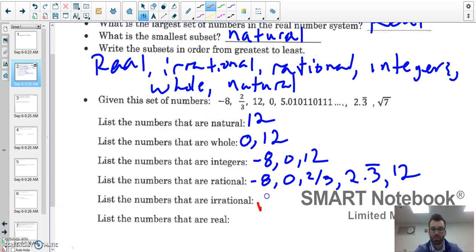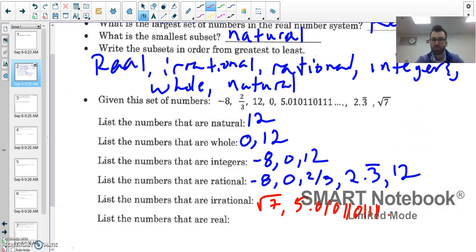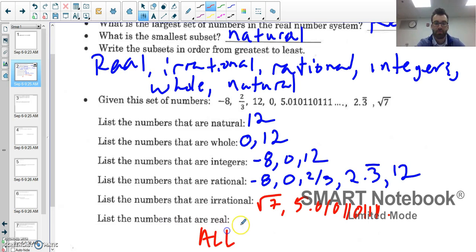List any irrational numbers. Well it's just the rest, the ones that are left. Pi, the square root of 7, and 5.01011... These are numbers that cannot be written as a fraction. Real numbers are all of them, all the numbers listed.